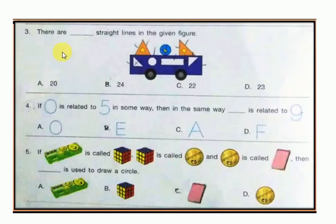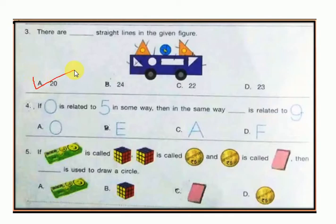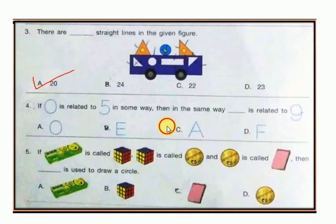Question number 3: there are test straight lines in the given figure. In this image you need to find how many straight lines there are — according to me there are 20 straight lines. Question number 4: if O is related to 5 in some way, then in the same way dash is related to 9. The options are O, E, A, F — so the answer is A.